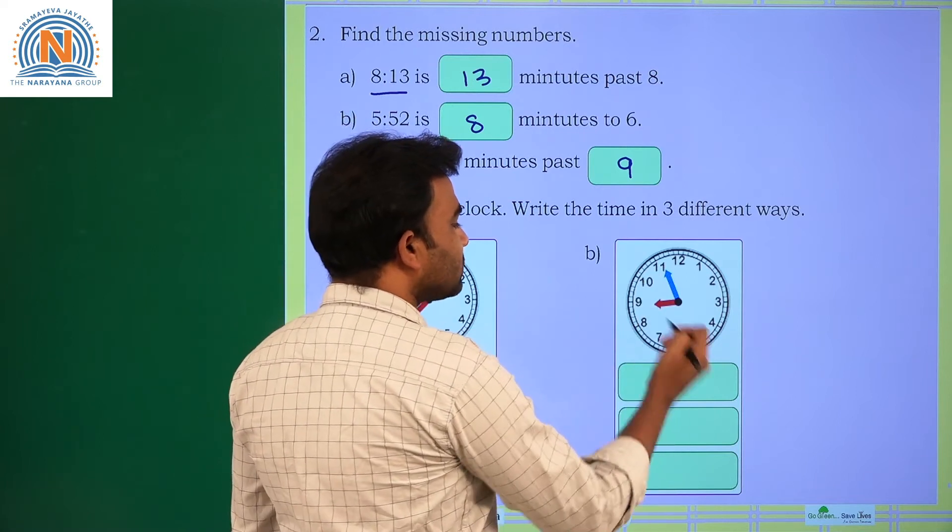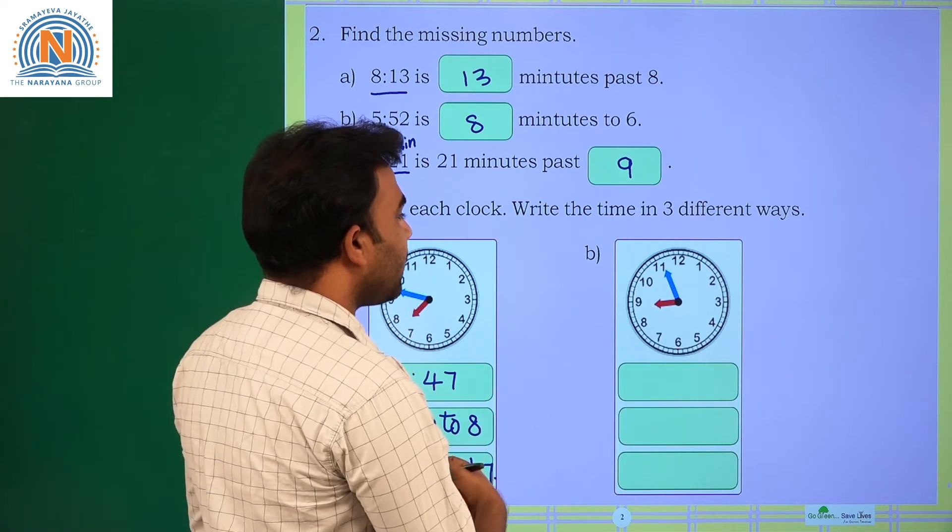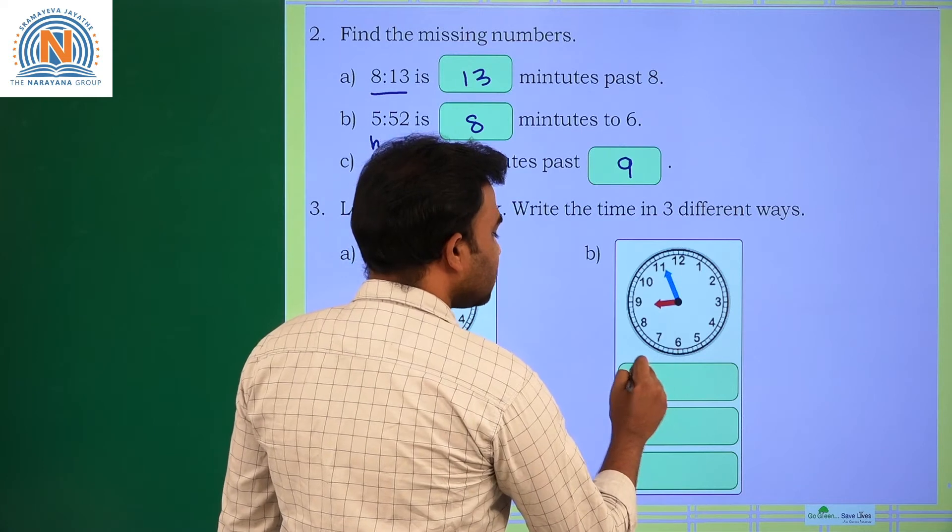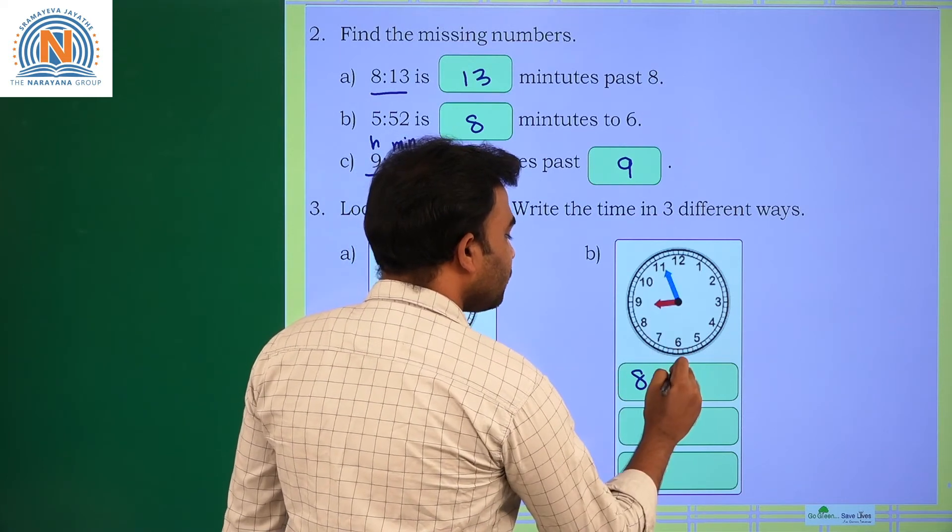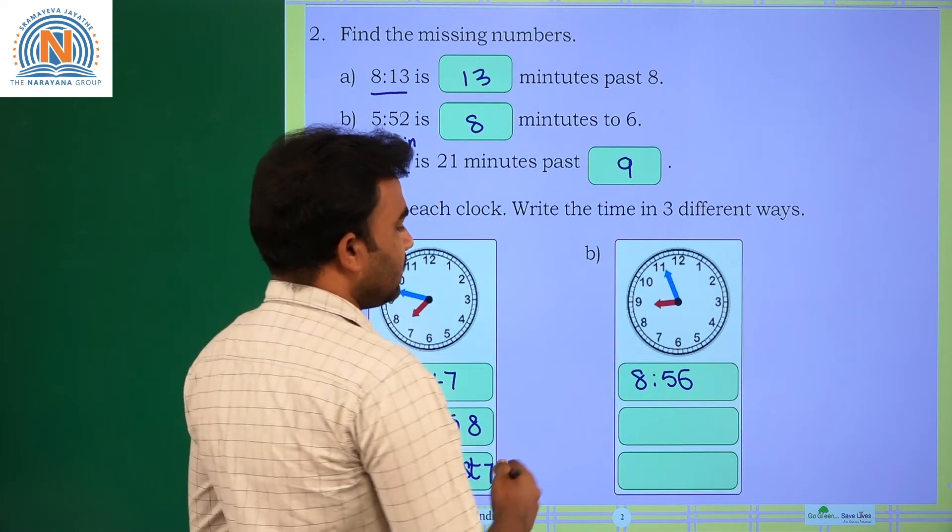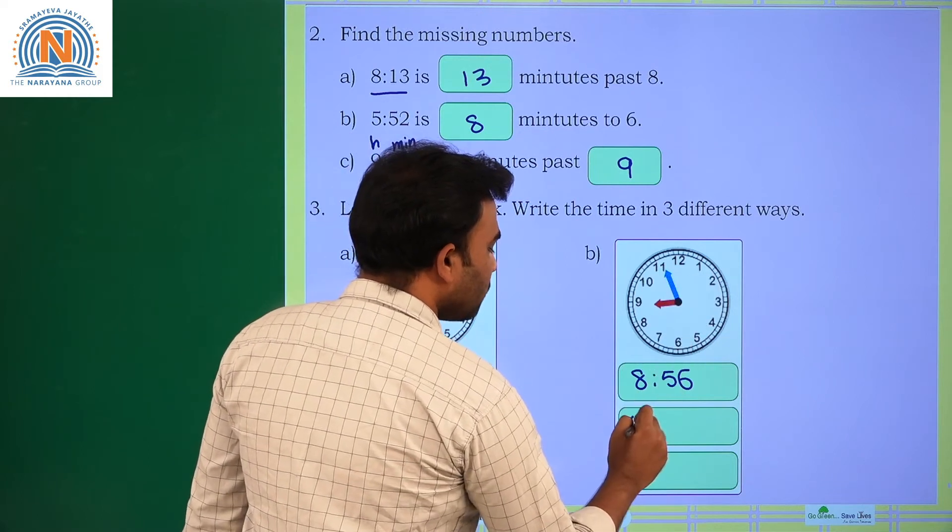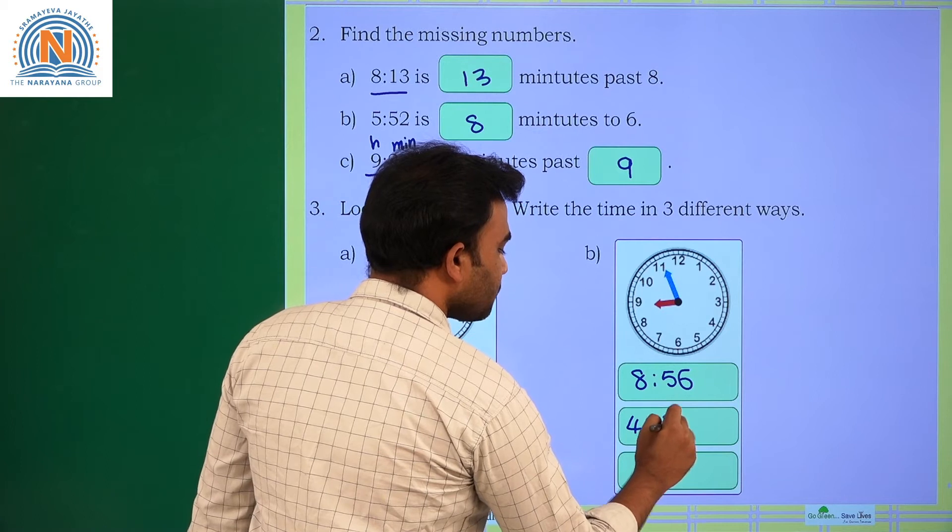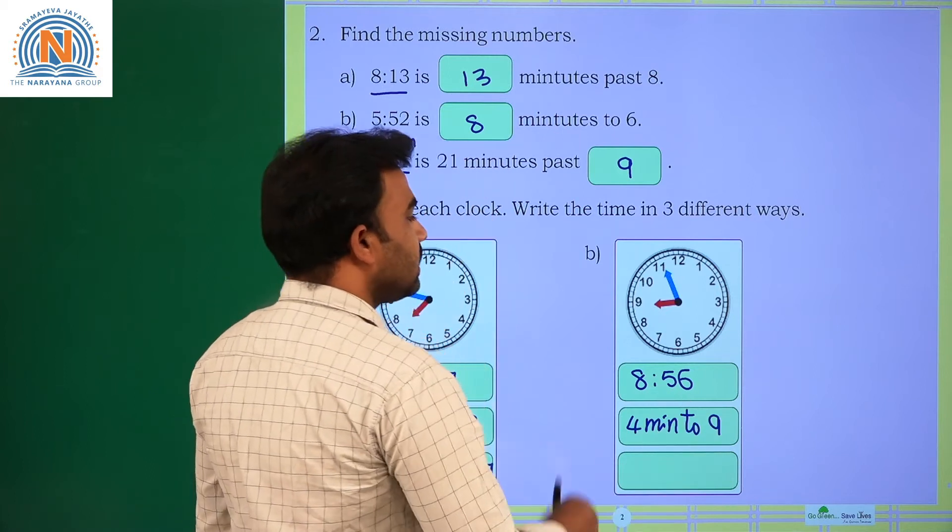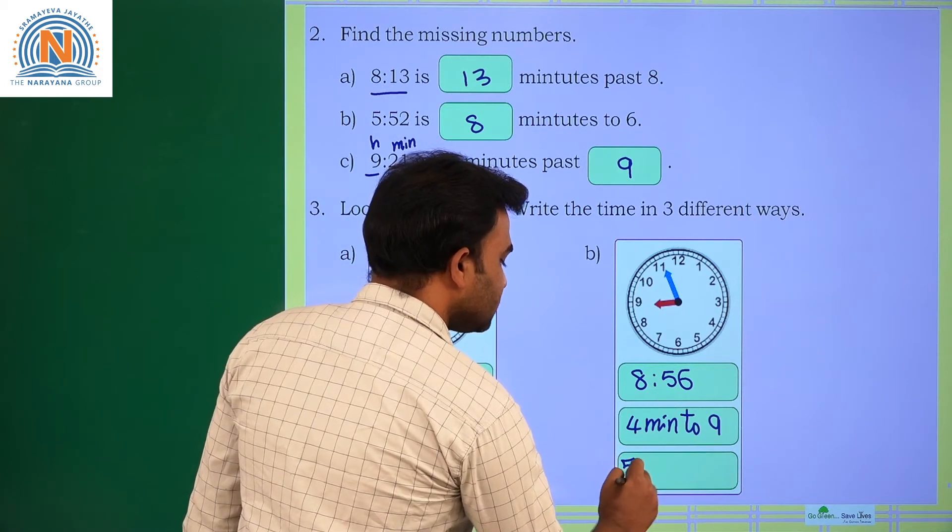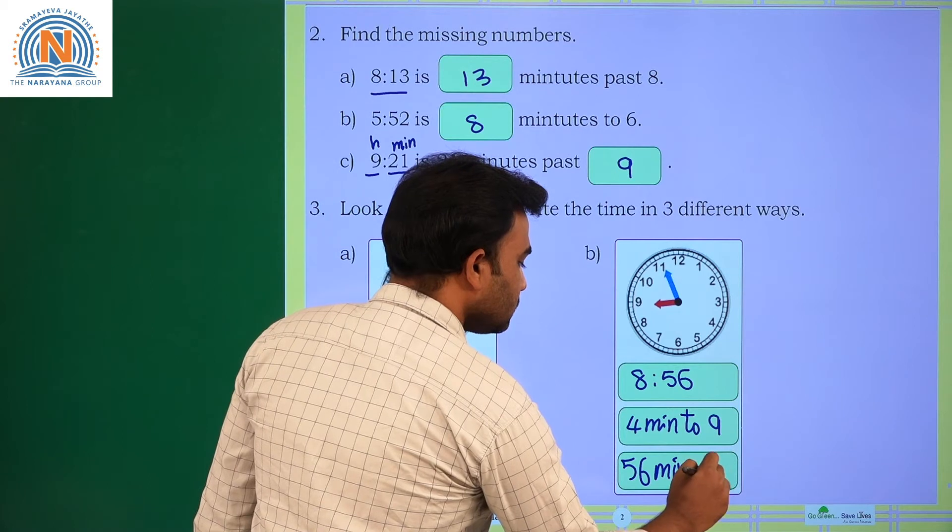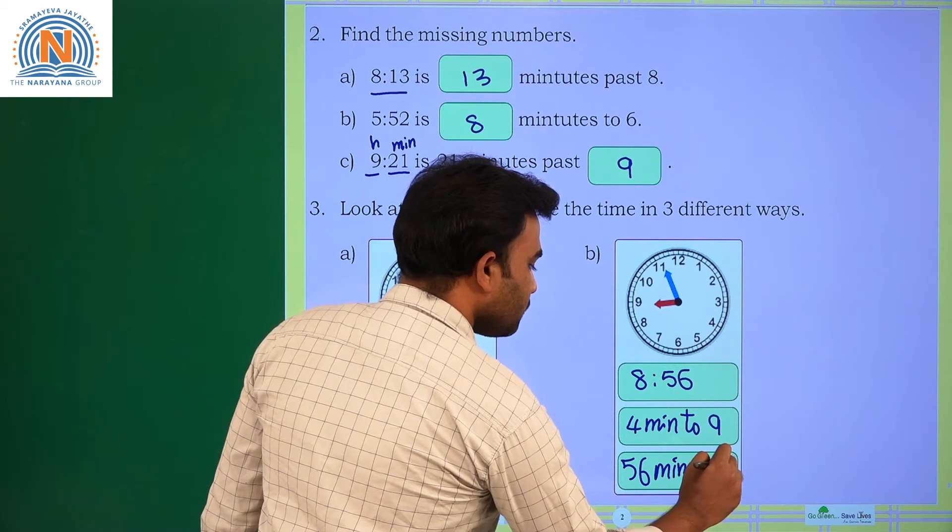Next here, where is the hours hand? The hours hand is nearby 9 and the minutes hand is reaching 12. Then it can be written as 8:56. How many minutes are there to get 9? Only 4 minutes. So, 4 minutes to 9. This 8:56 can also be written as 56 minutes past 8.